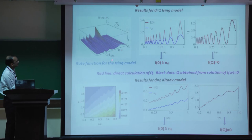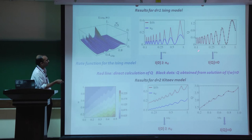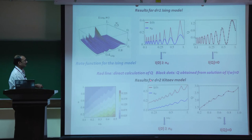We compute the rate function for the Ising model and check whether the relations hold. Computing N_d in the Ising model separately and comparing to I(0), we find I(0) is always greater than or equal to N_d. We also compute Q separately (the red line via direct calculation), and the black dots obtained from solving I(w)=0 fall exactly on top of each other, confirming the second relation.